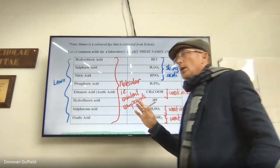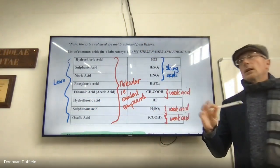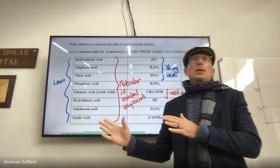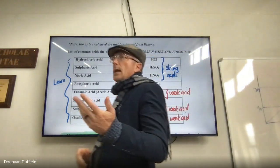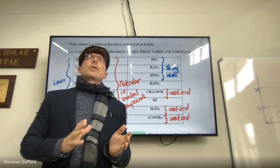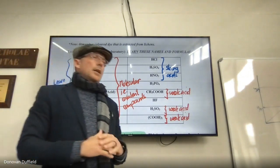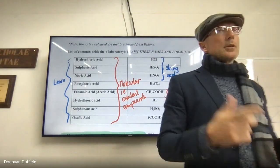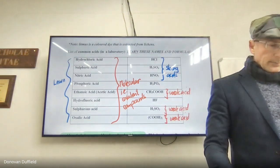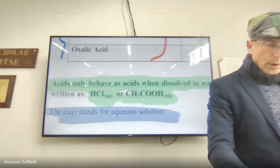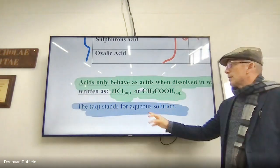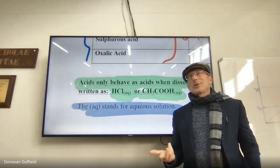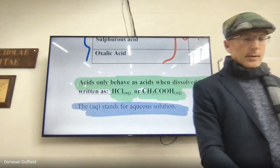We're using a binary approach of strong and weak, but in actual fact it's a continuum. At university you'll learn about Ka and Kb values — the higher the Ka value, the stronger the acid; the higher the Kb value, the stronger the base. We're going to work with acids and bases in the context of water, where water in certain cases becomes a reactant, especially with acids.